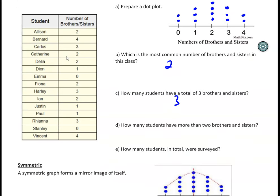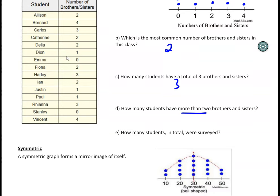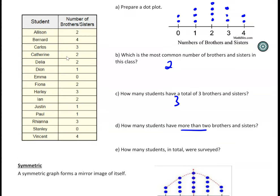How many students have more than two brothers? So you got to make sure you're careful of the wording. It's just more than two, so two doesn't count. So I'm looking at three and four. I combine those together, so it's going to be a total of five for that one. And how many students in total were surveyed? We just did that by counting the total. That was fifteen altogether.